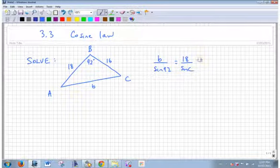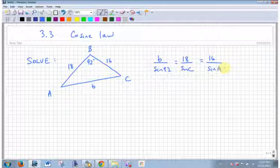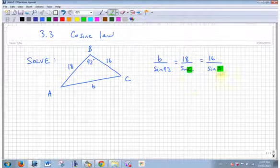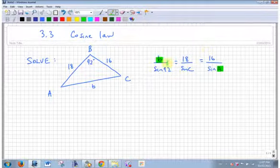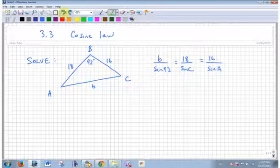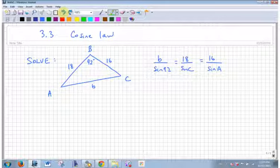I got another ratio here, that's little a, 16, over sine of A. Does that help me? No, because I still have two unknowns. If I look at those two I have two unknowns, if I look at these two I have two unknowns. So if that's all you got, you guys are stuck.